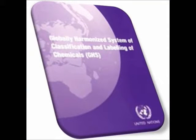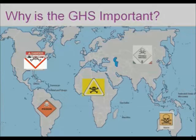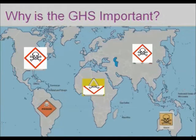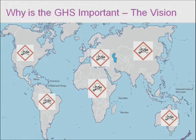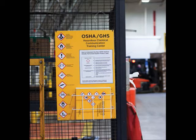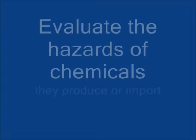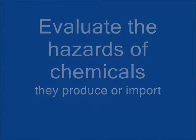The HazCom Standard is now aligned with the Globally Harmonized System of Classification and Labeling of Chemicals, GHS for short. Why is GHS important? Instead of having a variety of different safety data sheets and labels, the hazard warnings will now be the same regardless of who produces it or where it is produced. And, even more importantly, the message is the same regardless of who sees it. The basis for hazard communication has not changed. Chemical manufacturers and importers are required to evaluate the hazards of the chemicals they produce or import and prepare labels and safety data sheets to convey the hazard information to their downstream customers.